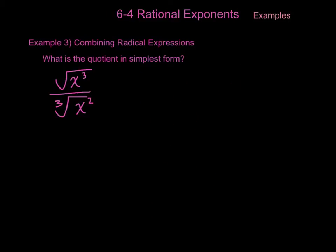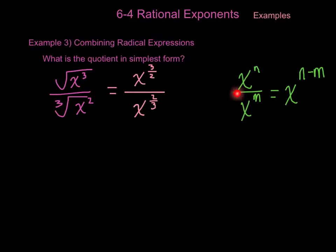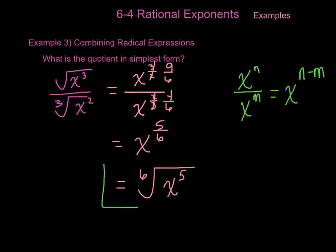Let's try another one. This time we have the square root of x cubed divided by the cubed root of x squared. The easiest way to do this is to convert to exponents. The numerator, the square root of x cubed, equals x to the 3 halves power. The denominator, the cubed root of x squared, equals x to the 2 thirds power. By properties of exponents, when you divide like bases you subtract their exponents. If we change both exponents to a common denominator, 3 halves becomes 9 sixths and 2 thirds becomes 4 sixths. So we have 9 sixths minus 4 sixths, which gives us x to the 5 sixths power. Converting back to a radical, our index will be 6 and our radicand will be x to the 5th power. That is our final answer.